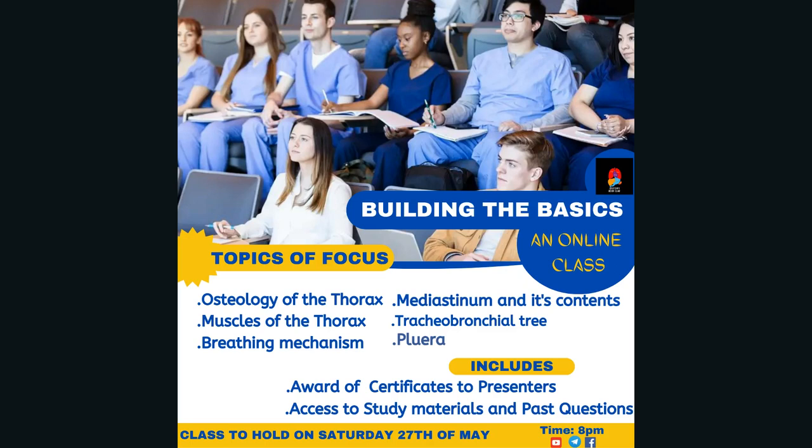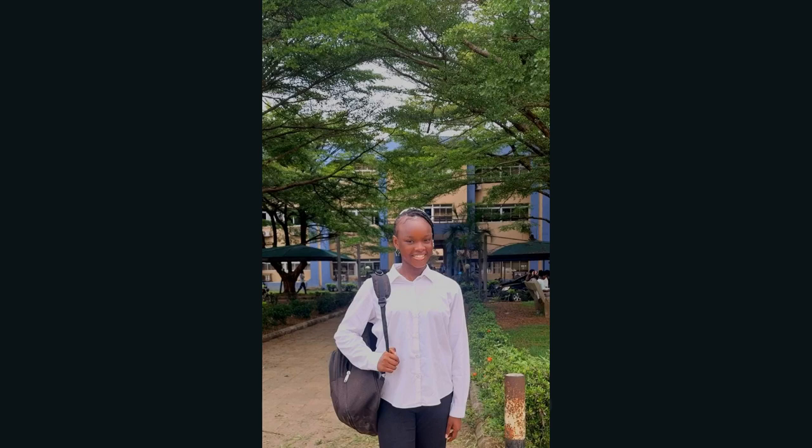The thorax refers to the upper region of the chest wall. It comprises the thoracic cage, which consists of three major bones: the ribs, the sternum, and the vertebrae. The thoracic cage functions to protect internal organs such as the heart and lungs, which are found in the thoracic region. The first component to discuss is the thoracic vertebra.